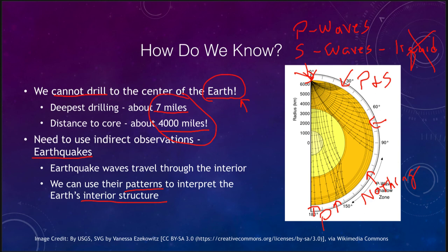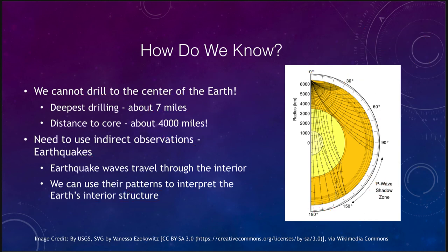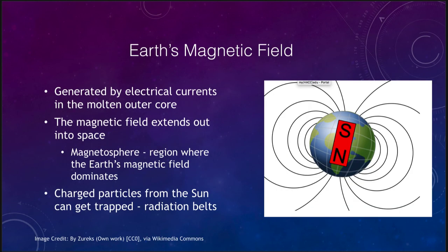Again, we cannot study those directly either. So the last thing to look at here is what happens when metals spin and they generate a magnetic field inside the Earth. And it is generated by electrical currents forming in the outer core of the Earth. So the molten outer core is a metal, iron and nickel. And as it spins, it generates electrical currents. And spinning electrical currents will give you a magnetic field. This magnetic field will then extend out into space, giving us a magnetosphere, which is where the Earth's magnetic field is dominant. And that means that it protects us from charged particles from the Sun.